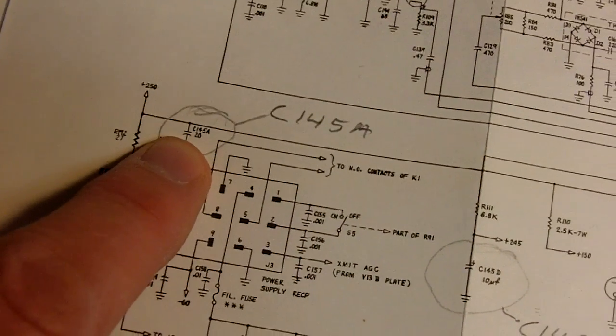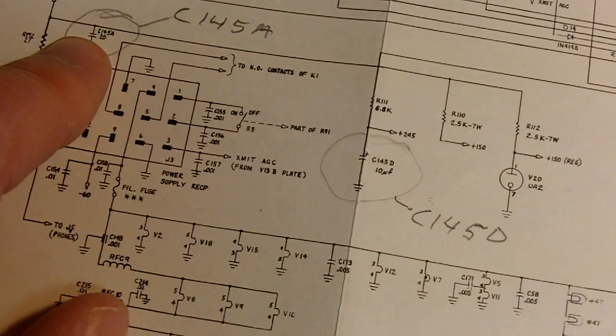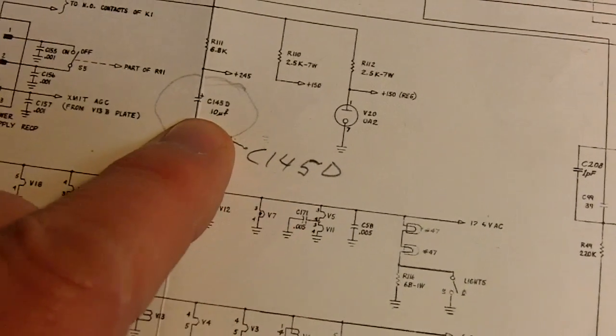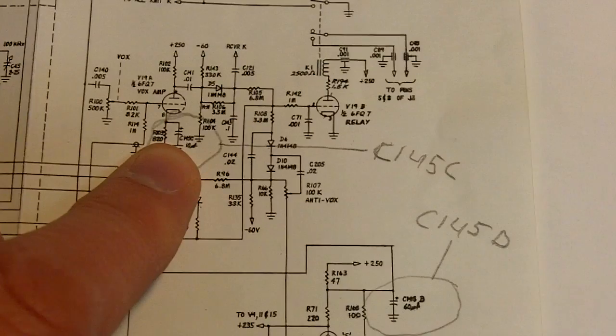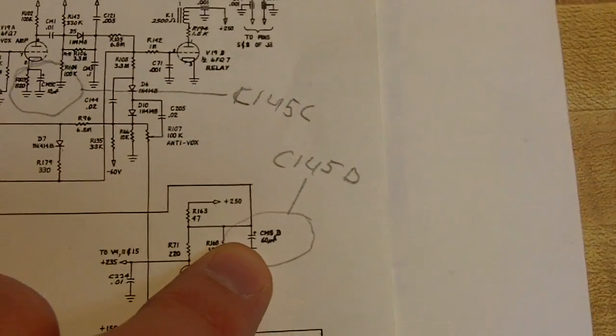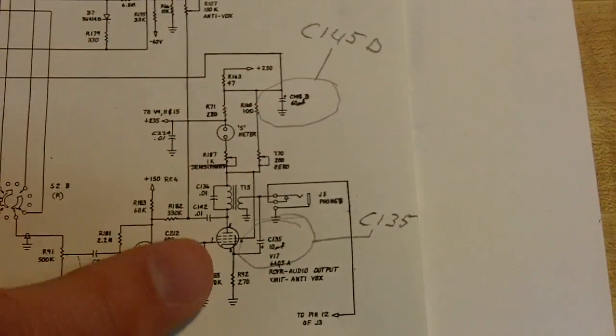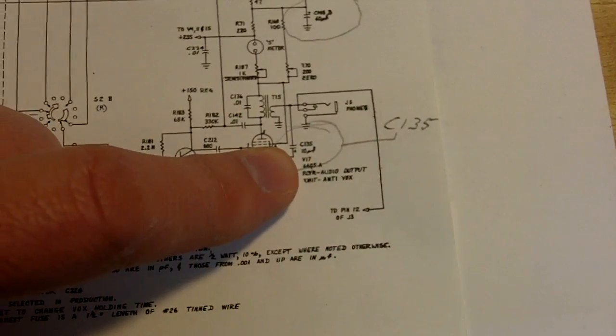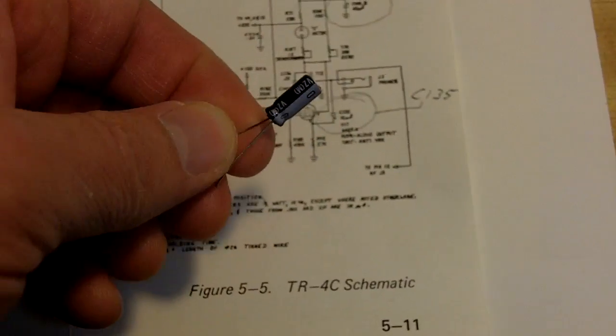So on the Drake schematic this is where C145 section A is. That's a 20 microfarad, 10 microfarad, C145D. And moving over here is C145 section C, 10 microfarad and a 60 microfarad at C145D right there on the diagram. Just below that here is a smaller capacitor 10 microfarad C135. That will be replaced by the smaller electrolytic style capacitor.